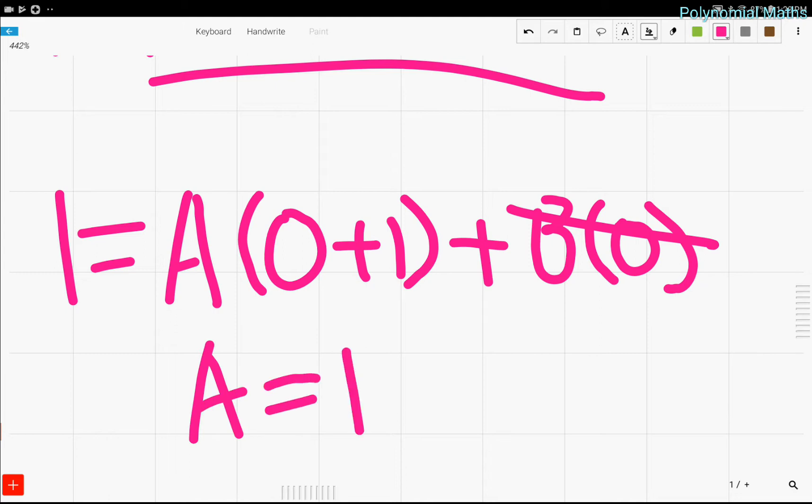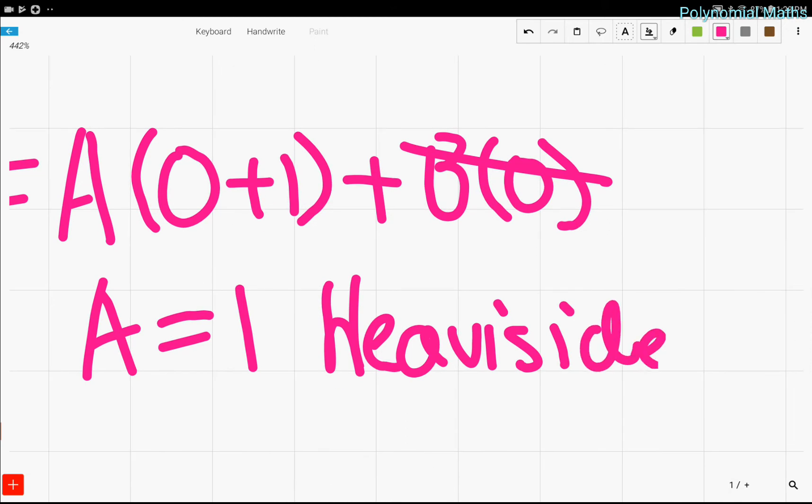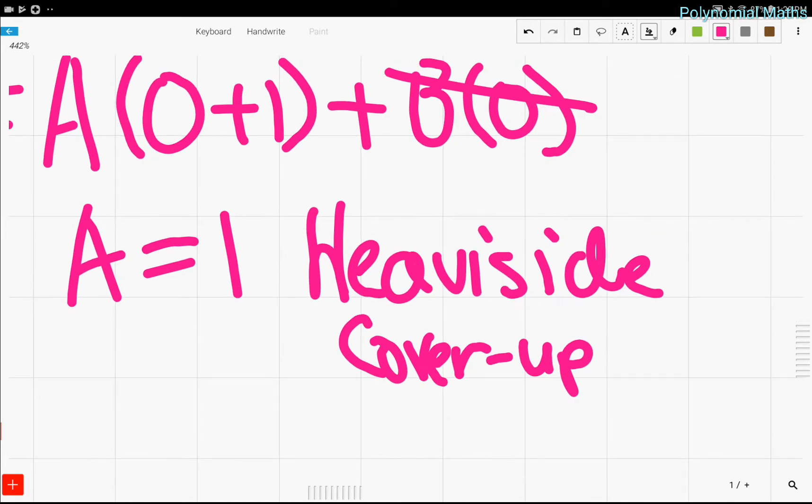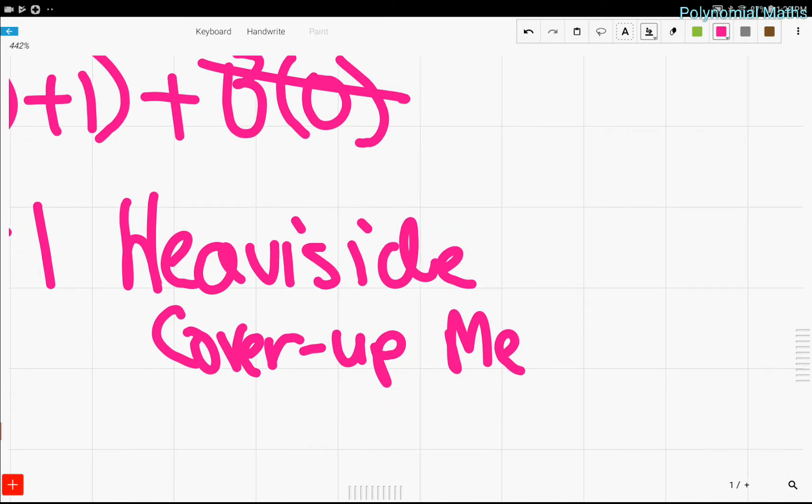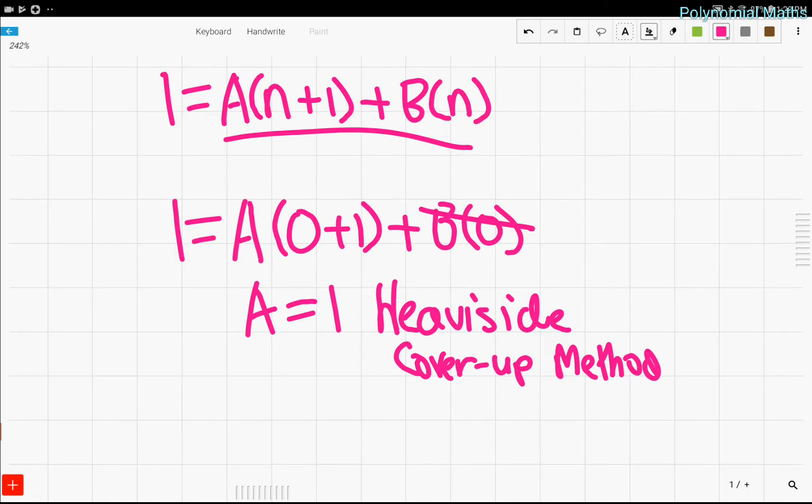Now, you might think this seems a little bit fishy because you're thinking, hey, this only works for one value of n. But what you'll find is that as long as it works for one value of n, it should work for all of the values of n. And this method is called the heavy side cover up method. And this is what we'll be using for basically the rest of this video because it's so easy to use.